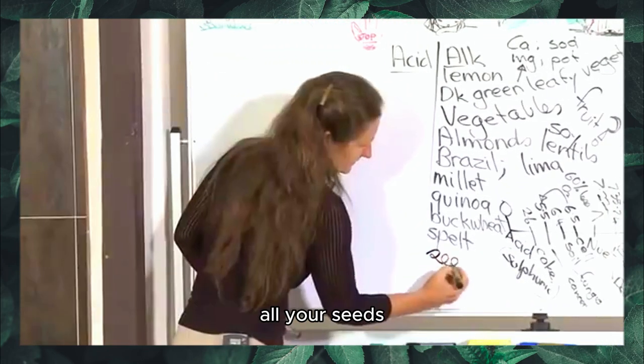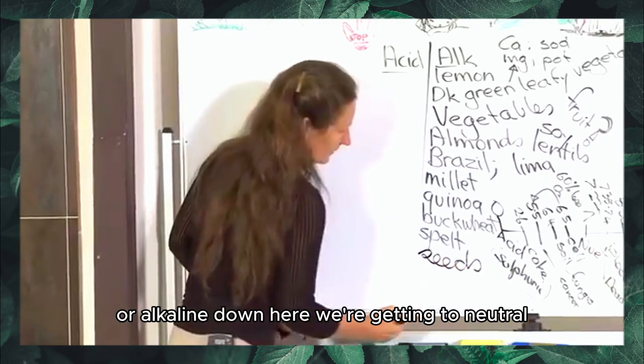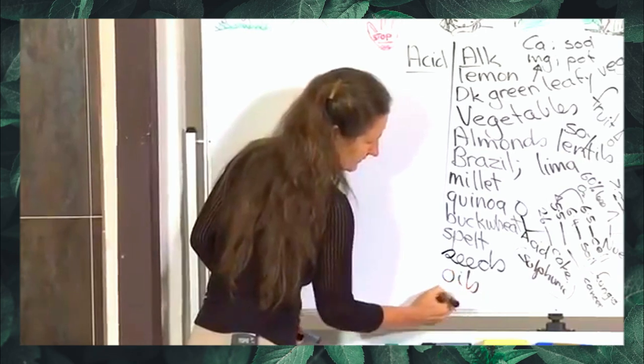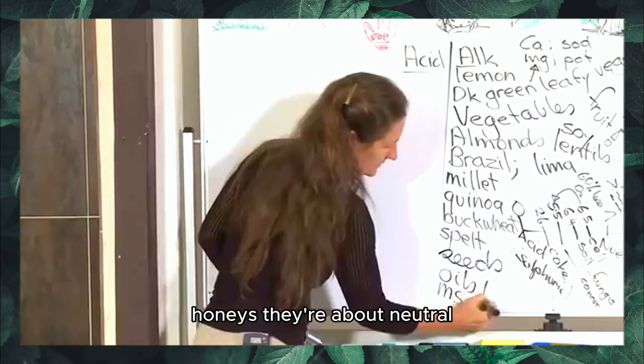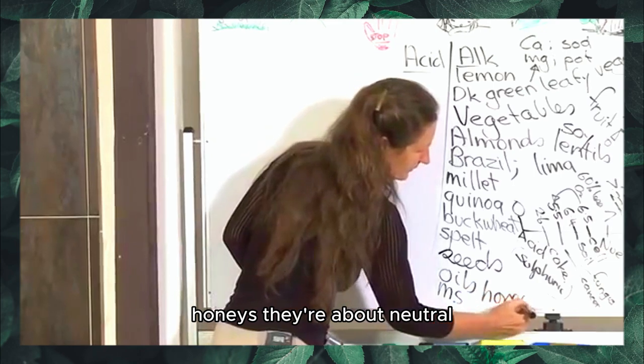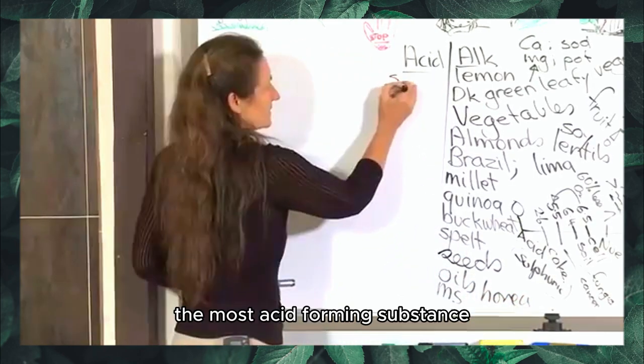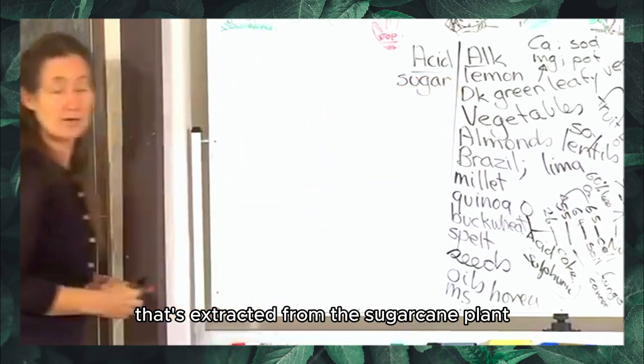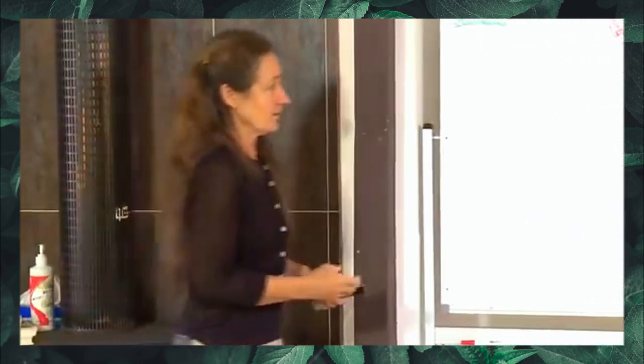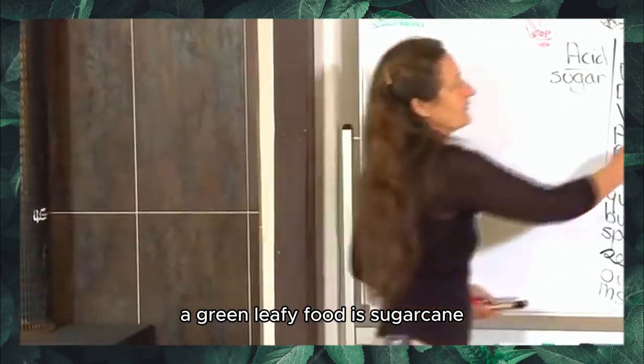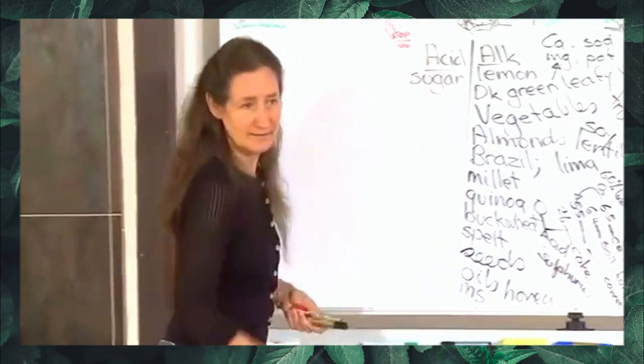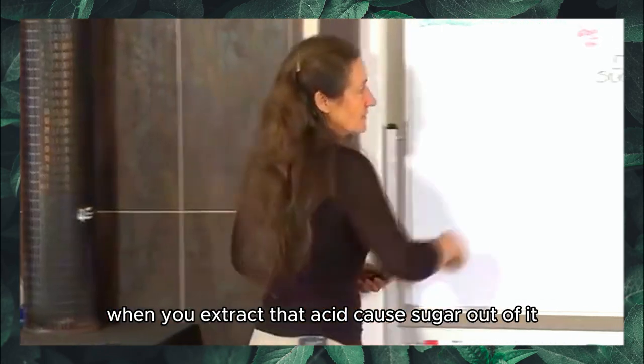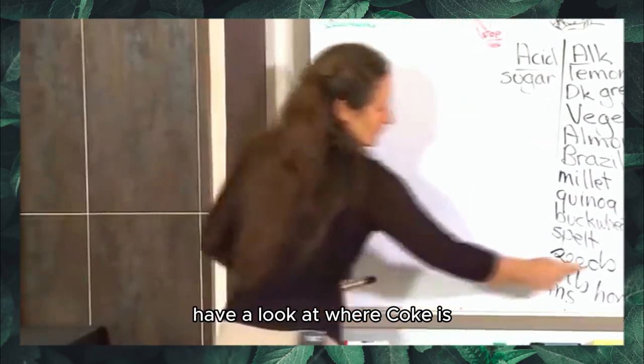All your seeds are alkaline. Down here we're getting to neutral, which is most of your oils, maple syrup, honey. They're about neutral. The most acid forming substance you can put into your body is the pure crystallized acid that's extracted from the sugarcane plant. A green leafy food is sugarcane. It is not acid forming in its natural state. But when you extract that acid, sugar out of it, have a look at where Coke is.